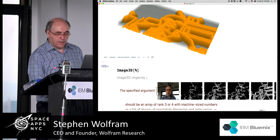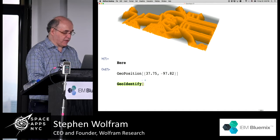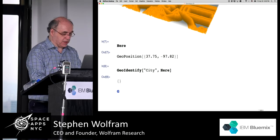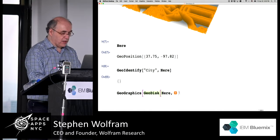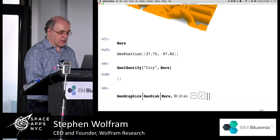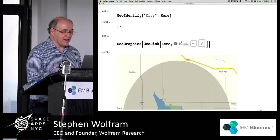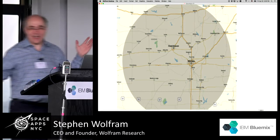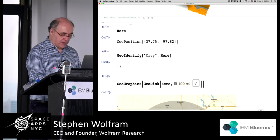Let's see where it thinks we are. That's a GeoPosition. Let's actually GeoIdentify — let's say 'city' — and that will hopefully tell us which city. Let's find out where that position is — GeoGraphics, let's make a 10-mile diameter disc around where we are right now. This is where it thinks the computer is based on geo IP. I think we have to let's find out where on earth it is. Wow, it's in Kansas. I bet that position is actually the center of the US — let's find out the geographic center.